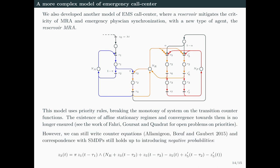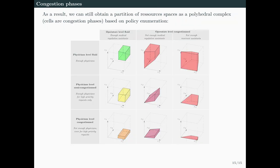In this case, the existence of affine stationary regimes and convergence towards them is no longer ensured. However, because we can still write the counter function dynamics, our correspondence with SMDPs still holds, up to introducing negative probabilities, for example here in the V3 equation. As a result, we can still obtain a partition of the space of resources, here in three dimensions because we have three types of agents, as a polyhedral complex whose cells are congested phases, by applying policy enumeration. In this monitor reservoir example, we obtain nine different phases and again minimum agent staffing recommendations in terms of the call center's parameters.